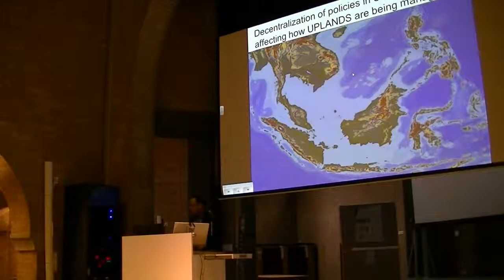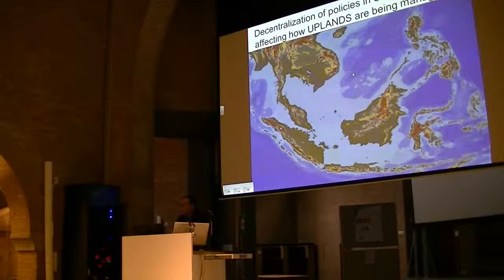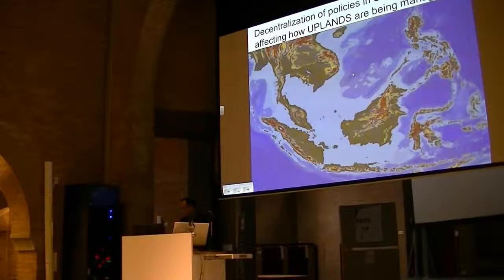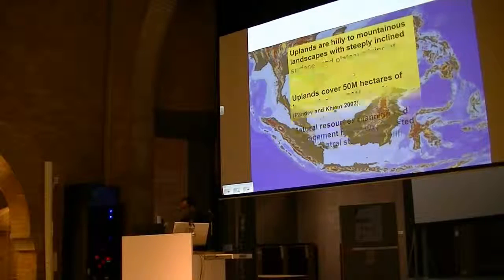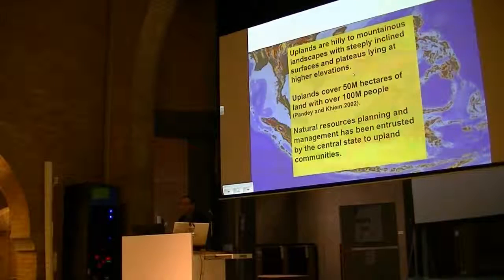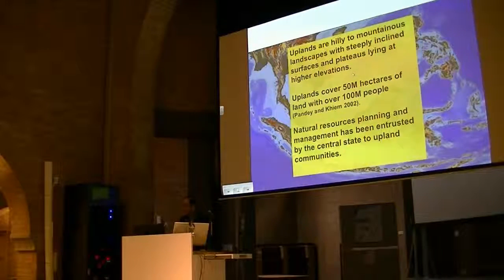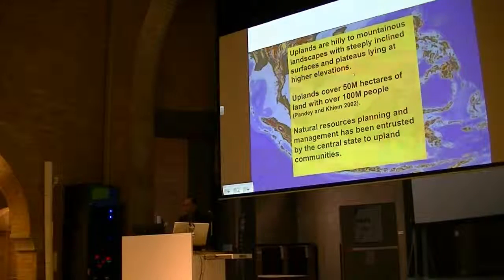This is Southeast Asia, and for the past 20 years, the decentralization of policies has been affecting how mountainous areas — or what we call uplands — are being managed. You see here the brown and yellowish portions — these are upland areas. Upland areas are hilly to mountainous landscapes with steeply sloped surfaces and plateaus lying at higher elevations. In Southeast Asia, they cover roughly 50 million hectares of land with over 100 million people living there.